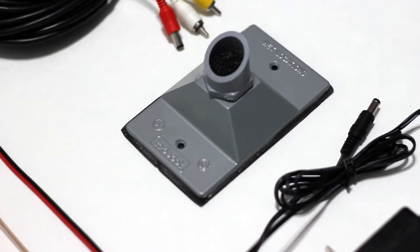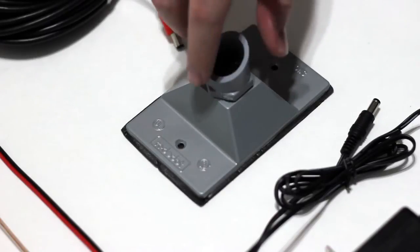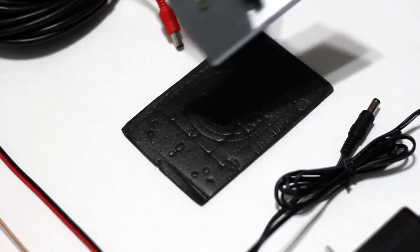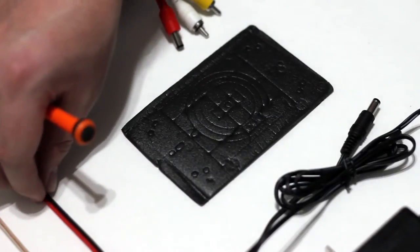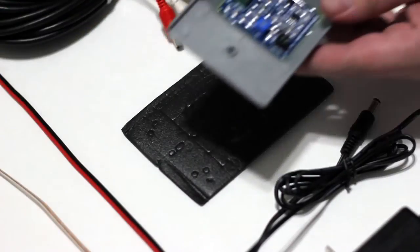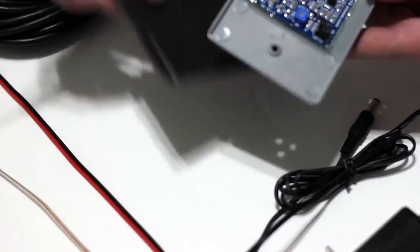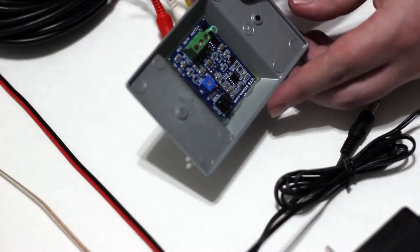Hopefully this video will make this a lot easier to actually be able to see it done. Basically what we're going to do is attach this RCA and power adapter to the screw terminals on the microphone.